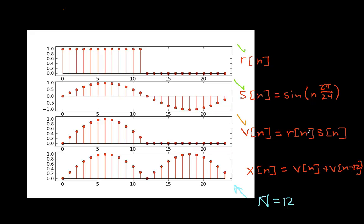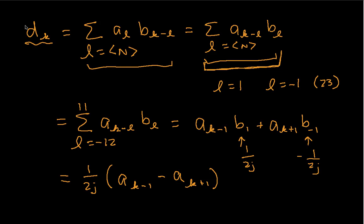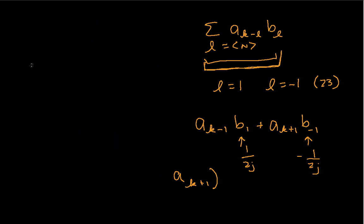We got V of n by multiplying R of n times S of n. And so what I'd like to do is give you an alternative to doing the convolution by looking at other properties of the discrete time Fourier transform.